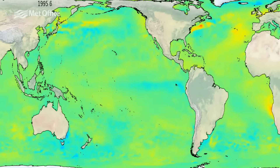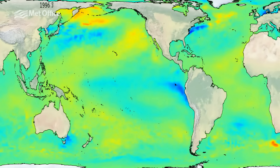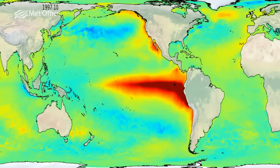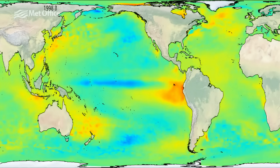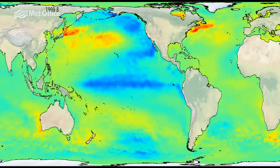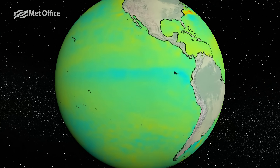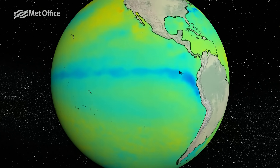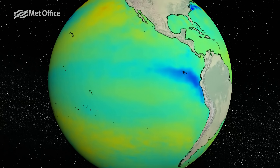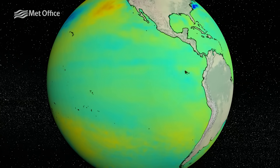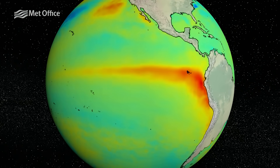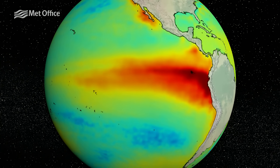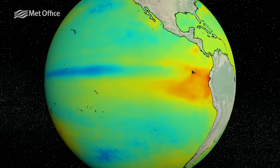There's another impact from El Niño which happens because of all the extra heat at the surface of the tropical Pacific. This releases vast amounts of energy into the atmosphere, which can temporarily push up global temperatures. This is why El Niño years often feature among the warmest on record. Each El Niño event is different, so the global impacts can change. You can find out more about the differing impacts of El Niño on our website. El Niño peaks around Christmas time and lasts for several months.